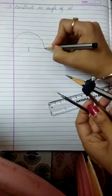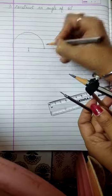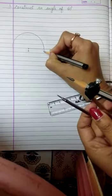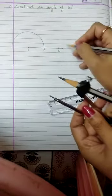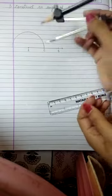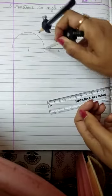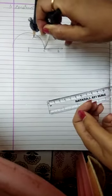Again place the compass on point C, mark an arc here point D.